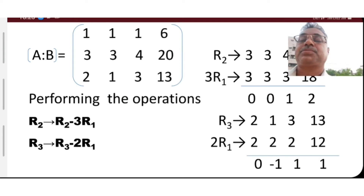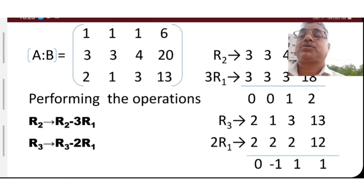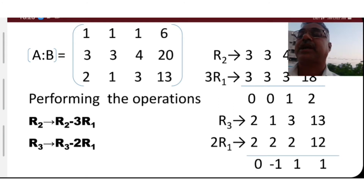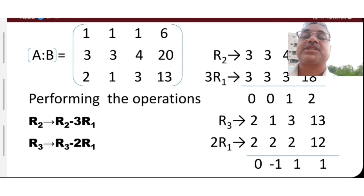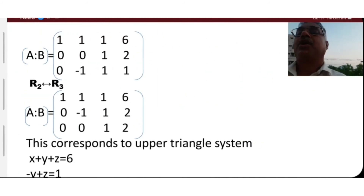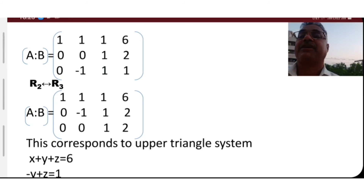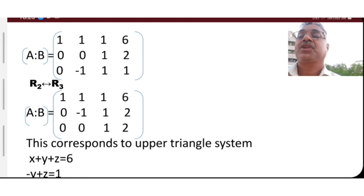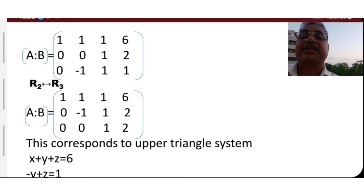The aim of these row operations is to make the first-column elements of the second and third rows equal to zero. The resulting augmented matrix has first row [1, 1, 1, 6], second row [0, 0, 1, 2], and third row [0, -1, 1, 1].